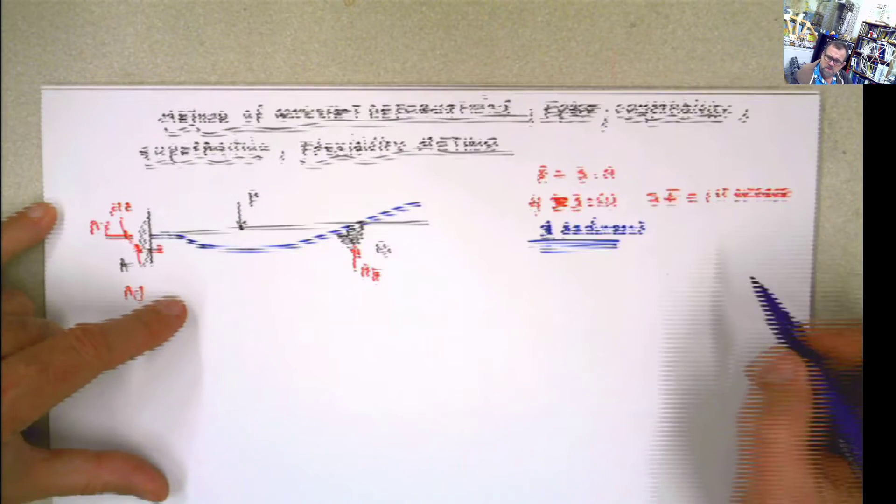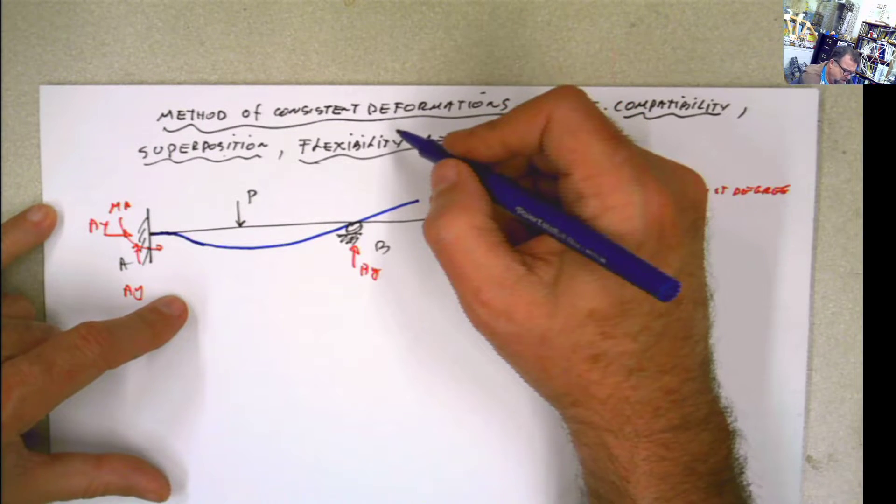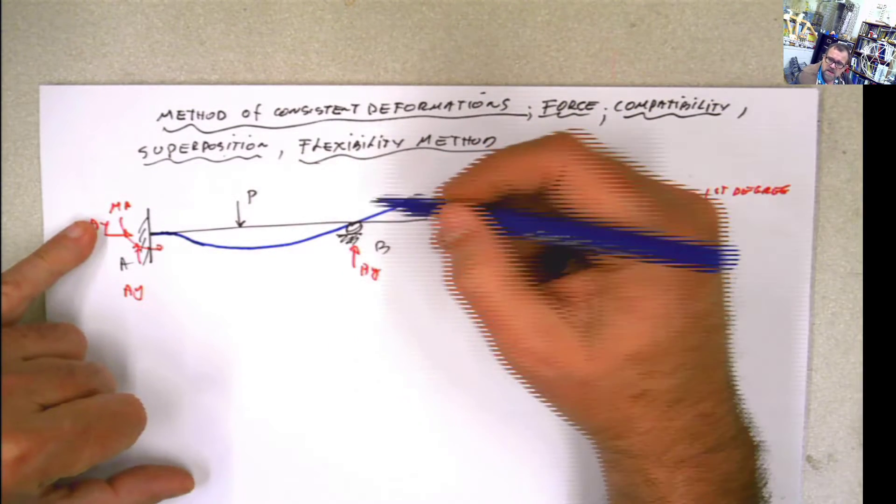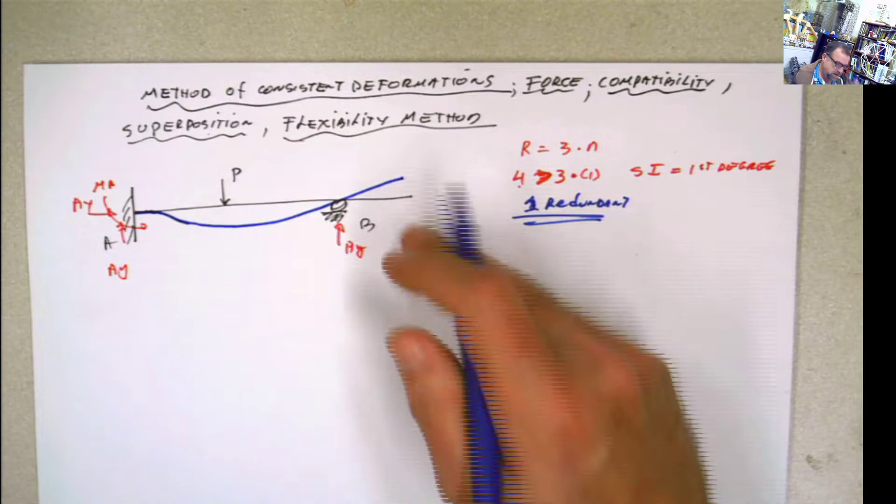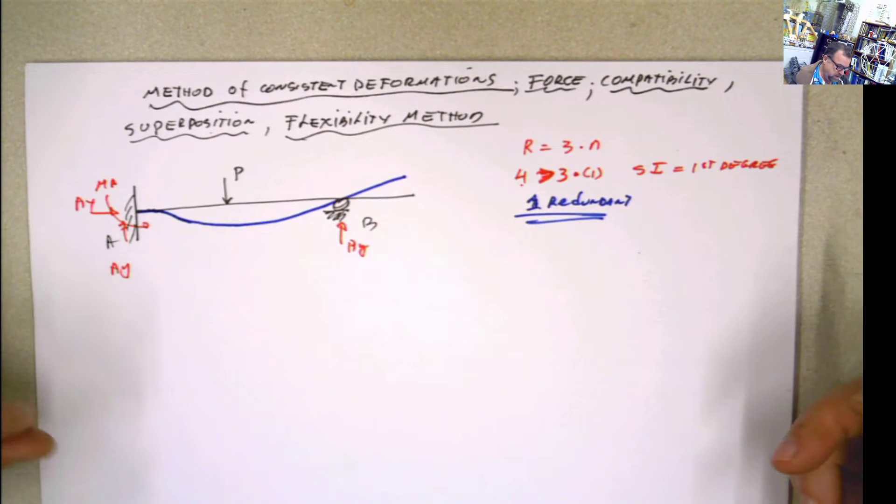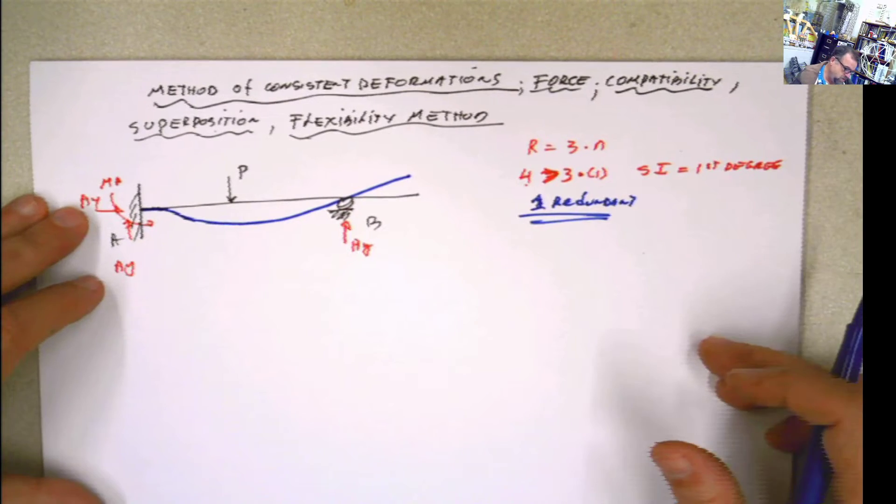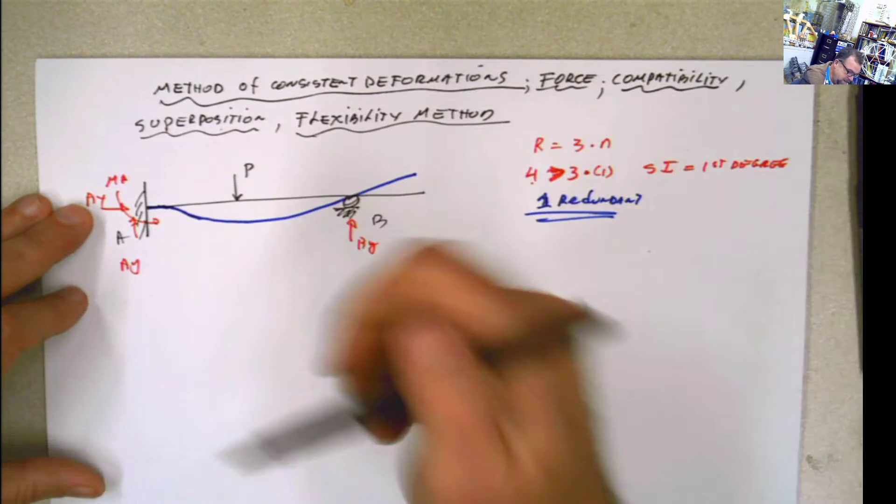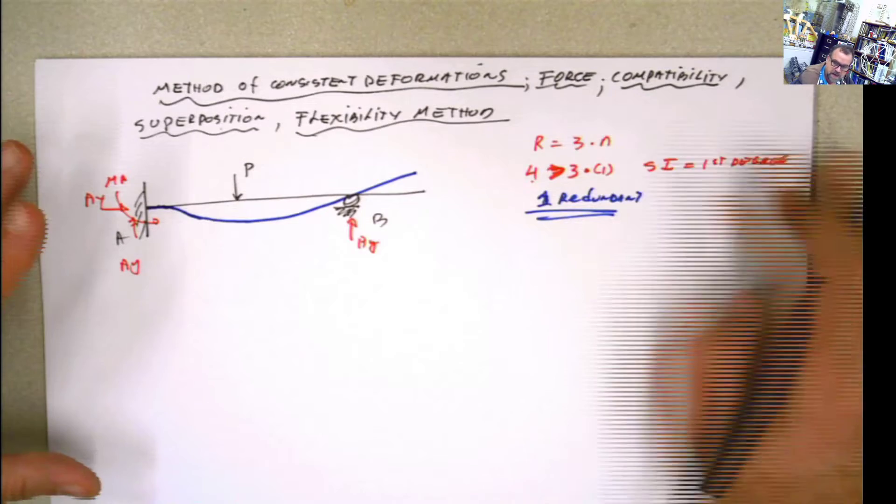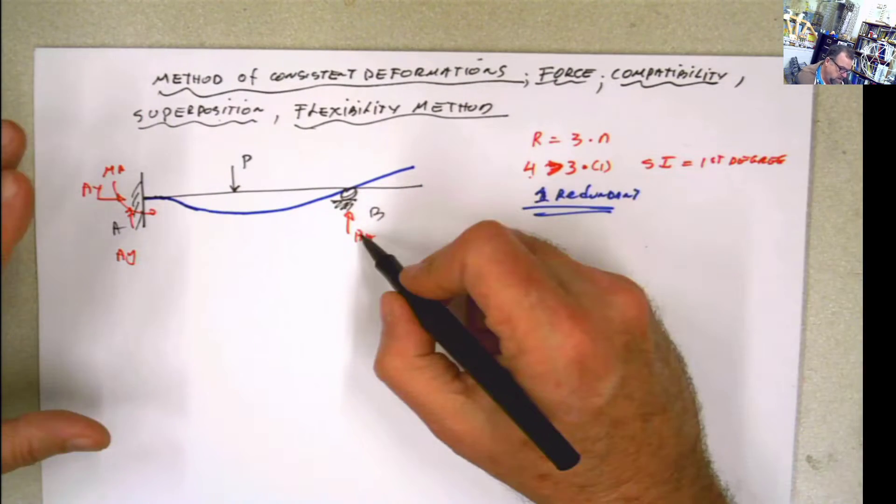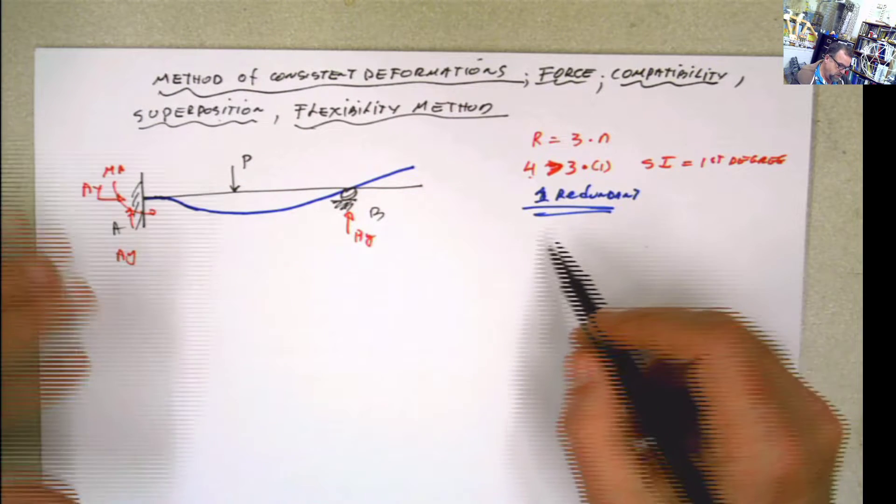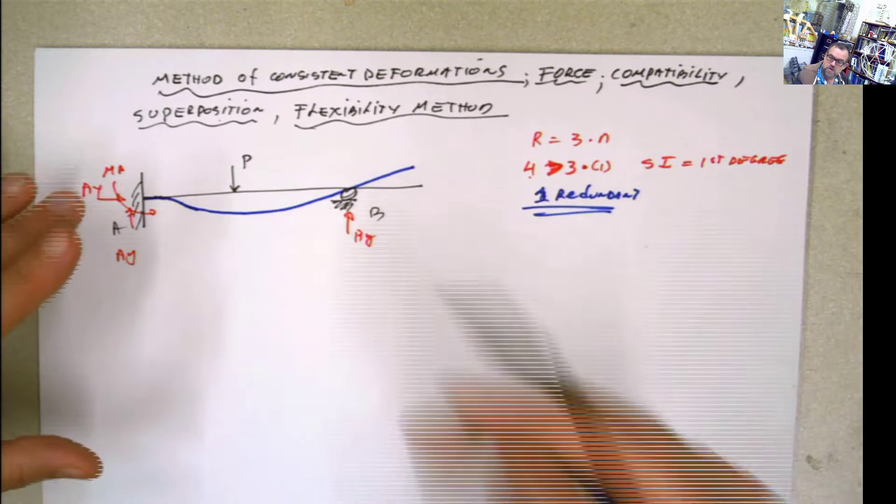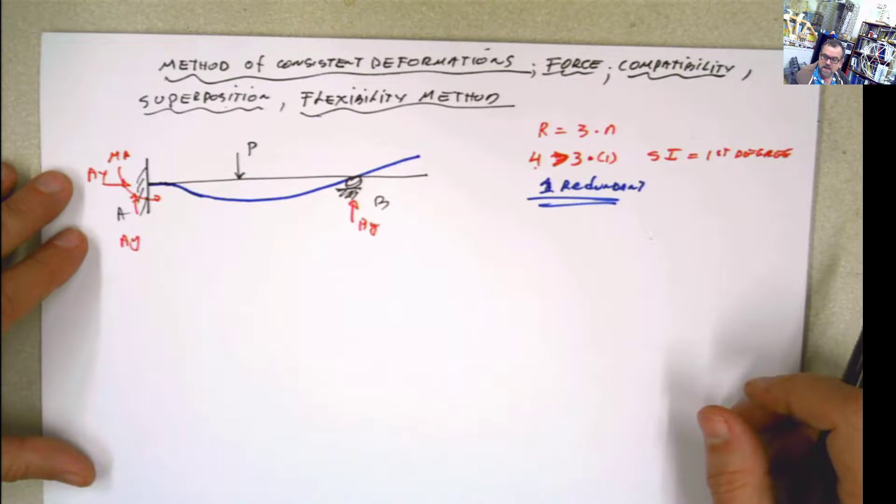So if you have that in this situation, this is going to be zero here because it's fixed, so the rotation is zero. It's going to come somewhere like that and it's going to go there, basically something like that. Now what is this method? Why it's called superposition? Why it's called consistent deformations? Because I can convert these into two or more. If we have one redundant, then I can convert this usually in two different structures.